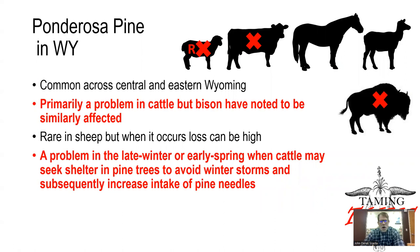Here in Wyoming, ponderosa pine is common across the central and eastern portions of the state. This primarily causes problems in cattle, but also possibly bison as well. In sheep, problems have been noted although they have been rare, but when they have occurred, losses have been significant.